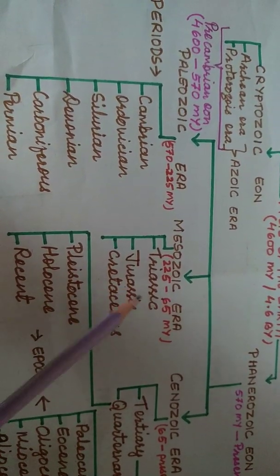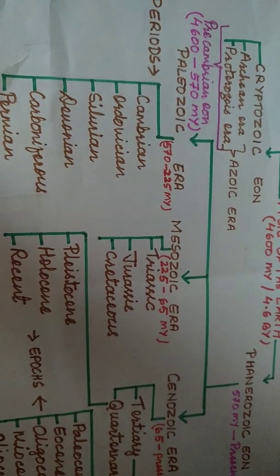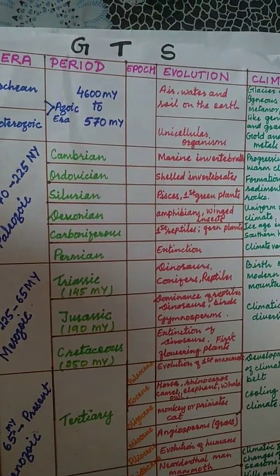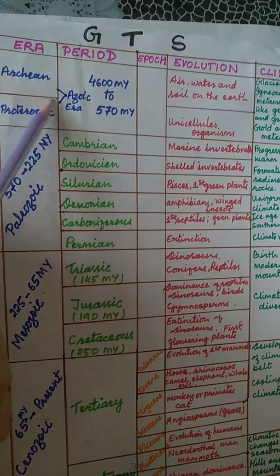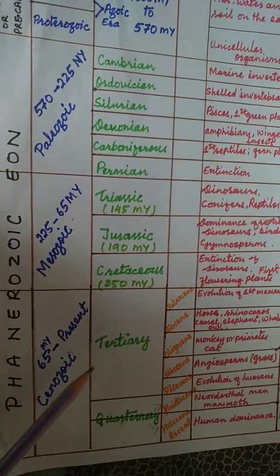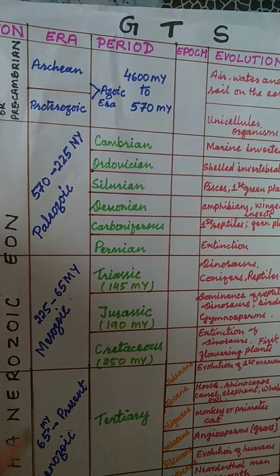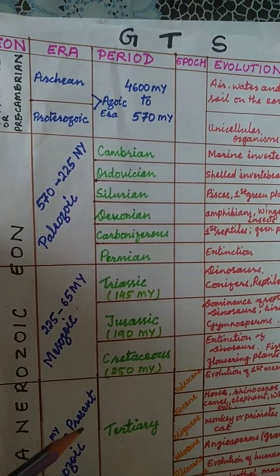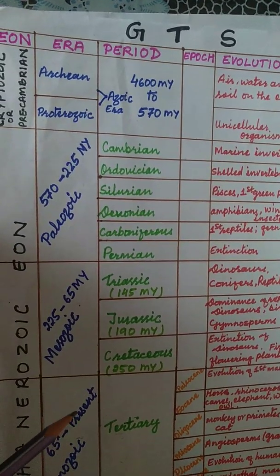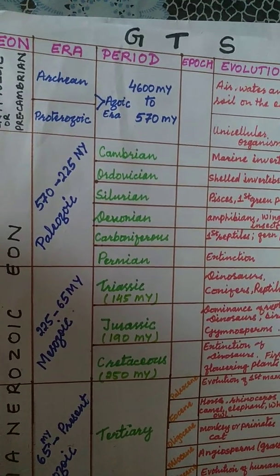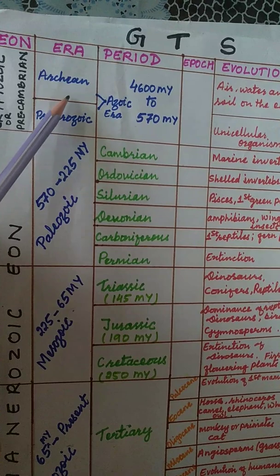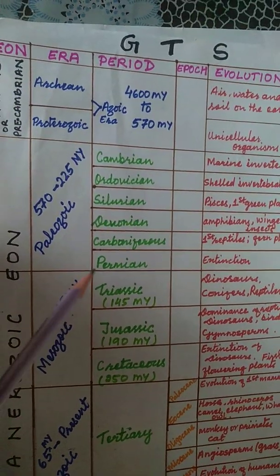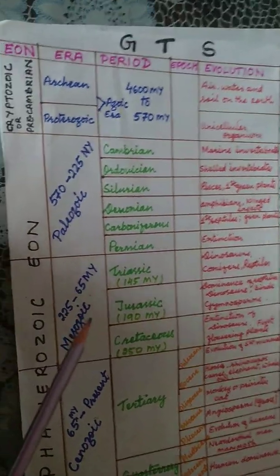Now we are going to see the actual geological time scale table. This table should actually be upside down — the oldest period should be at the bottom and the current one at the top, according to the rule based on strata in sedimentary rock. Sedimentary rock contains fossils and keeps the record of geological time. The oldest layers are deep inside and current ones are on top. However, for easier study, the table is presented the other way around.